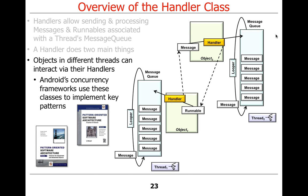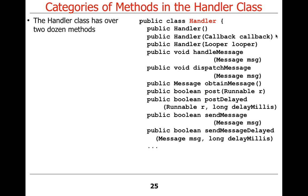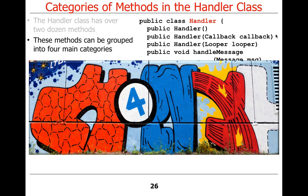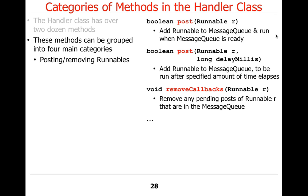There's a whole pile of patterns used, and the two most important ones in this context are the command processor pattern and the active object pattern — we'll look at both. The handler class has a lot of methods, about two dozen, of which just a few are shown here. There are four main categories, using superhero metaphors, and some methods deal with posting and removing runnables.